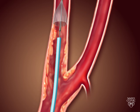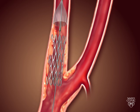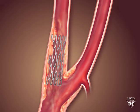A small metal coil called a stent is inserted into the vessel. The stent serves as a scaffold to help prevent the artery from narrowing again.